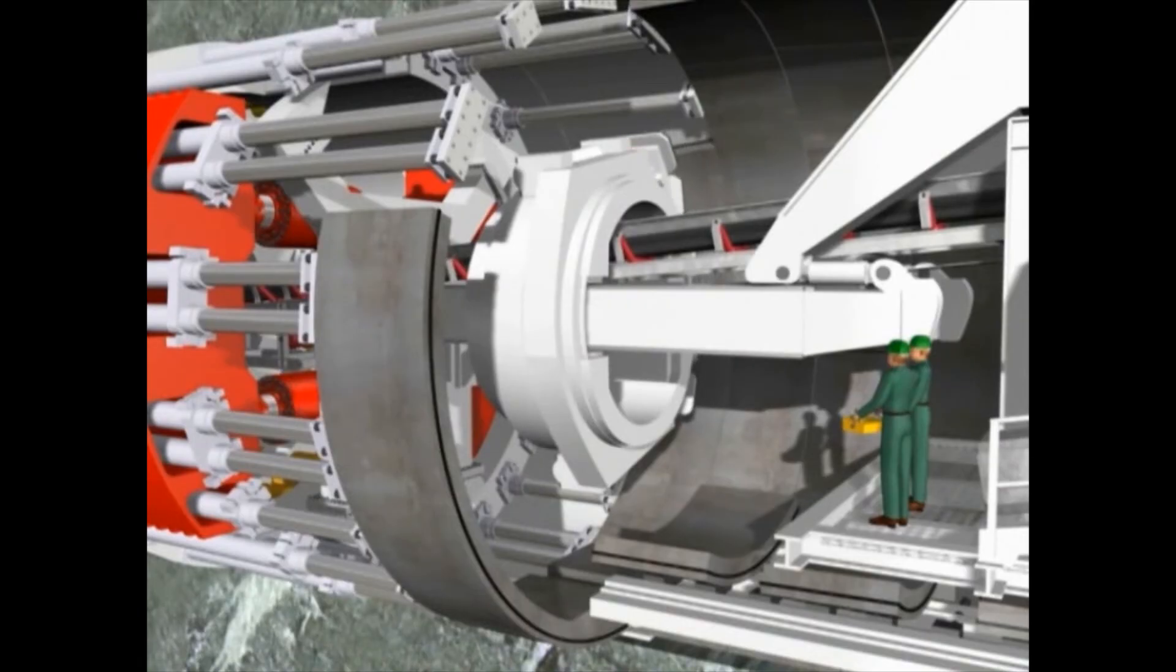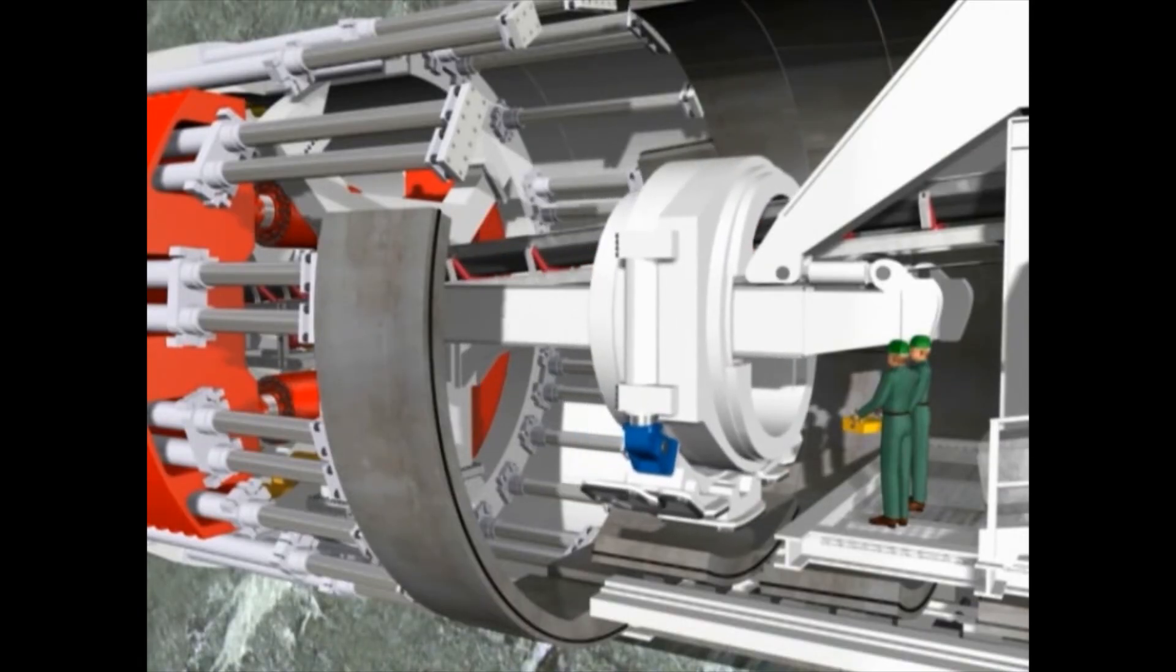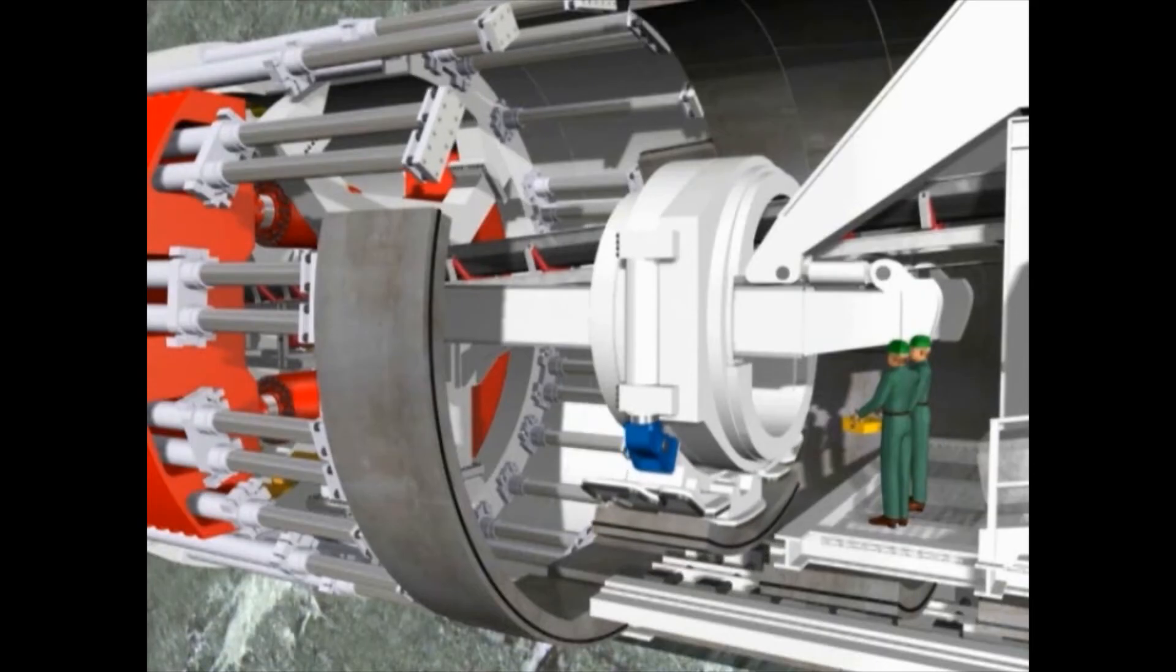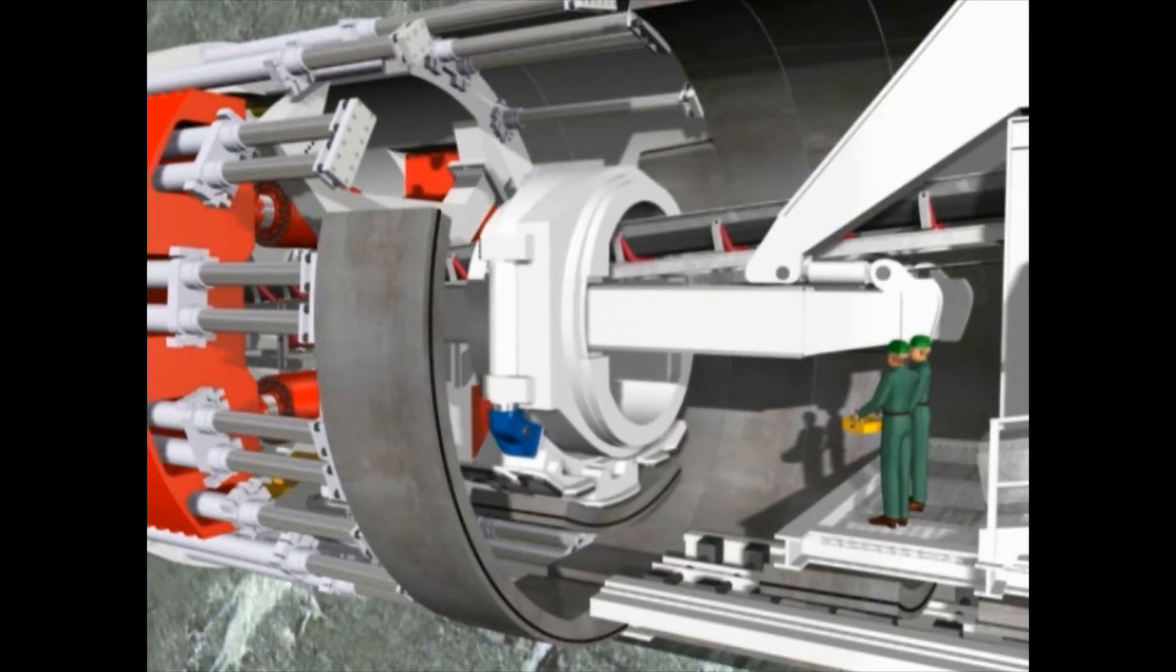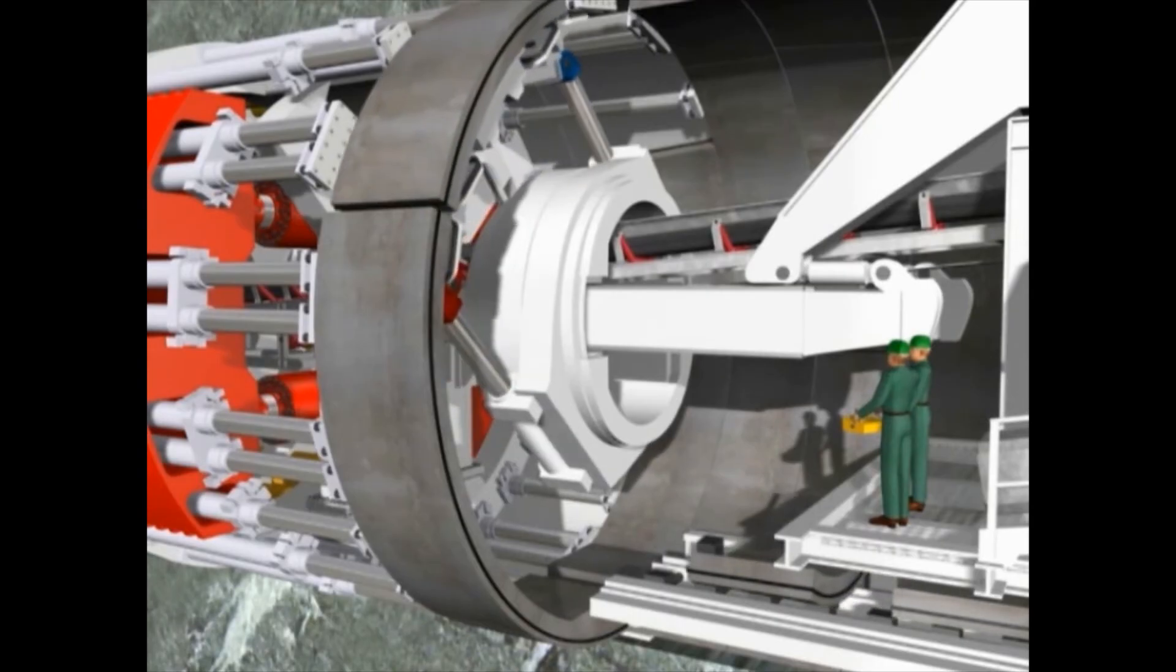At their exact intended location, the auxiliary cylinders are retracted prior to setting a new segment. The segment is set and braced immediately in place along with the overall system by the extension of the auxiliary thrust cylinder.